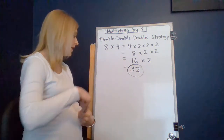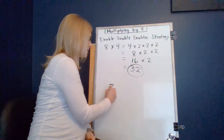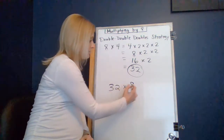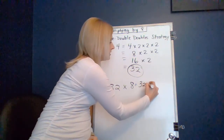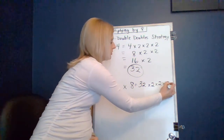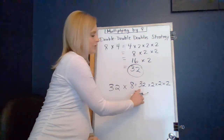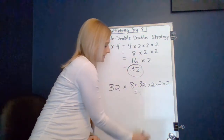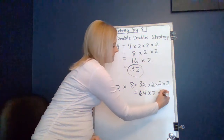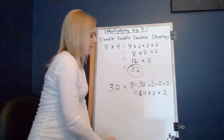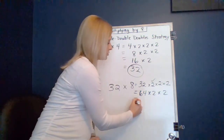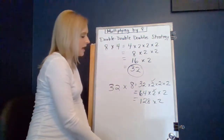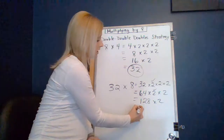And that works great with larger numbers too. If you wanted to take something like 32 times eight, you could use the double-double-double strategy here and think of this as 32 times two times two times two. Let's see how fast this is. So 32 doubled would be 64. Then we have to double 64, so 64 doubled would be 128. Then we just have to double one more time, and 128 doubled would be...